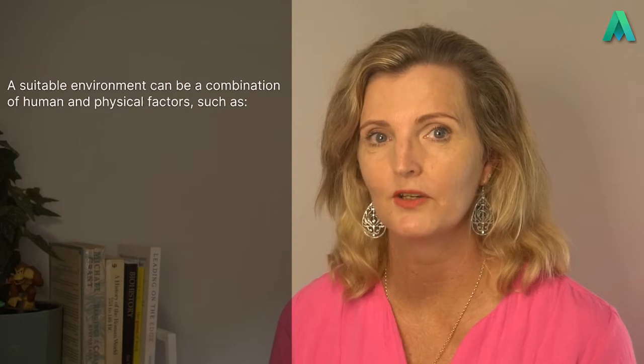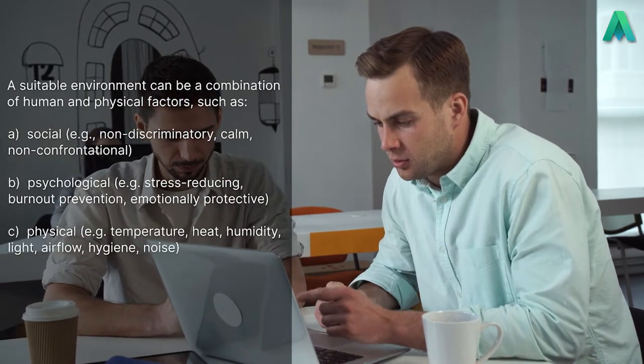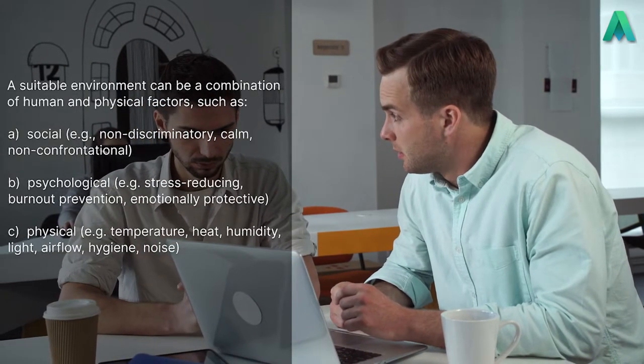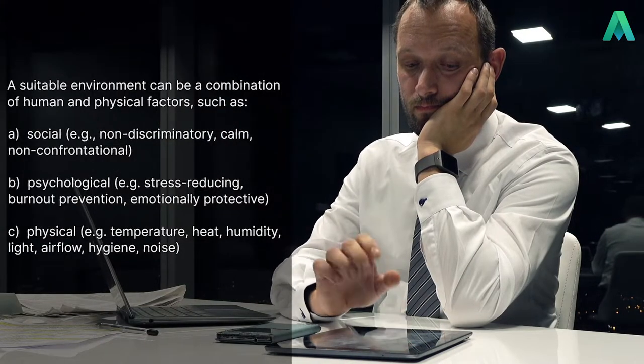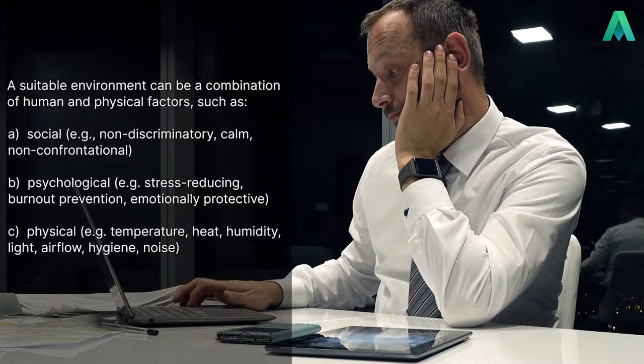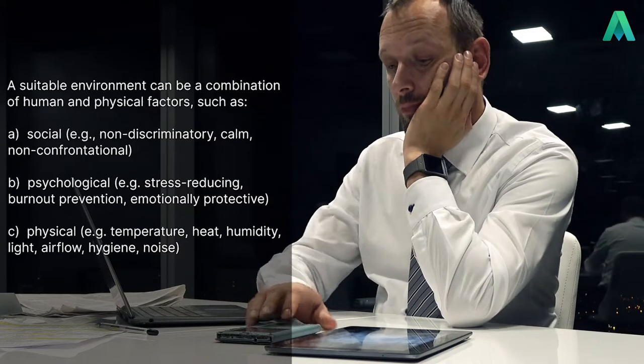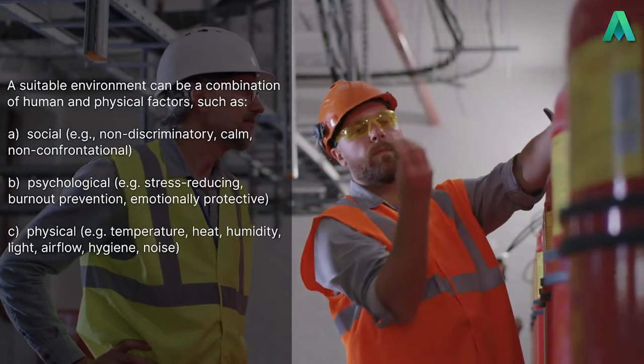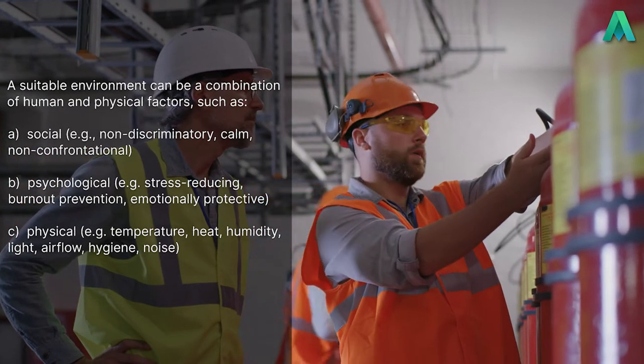ISO 9001 has added a note at the end of this clause telling us what environment could be. A suitable environment can be a combination of human and physical factors such as social — which could be non-discriminatory, calm, non-confrontational — psychological — which could be stress reducing, burnout prevention, emotionally protective — and finally physical, which could be temperature, heat, humidity, light, airflow, hygiene or noise.